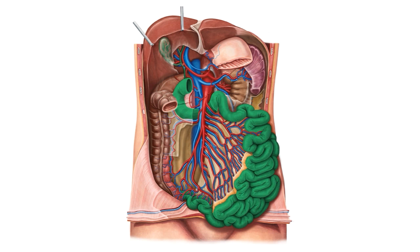The small intestine is composed of three parts: the duodenum, the jejunum, and the ileum. Superiorly, it's continuous with the stomach, and inferiorly, it's continuous with the large intestine.